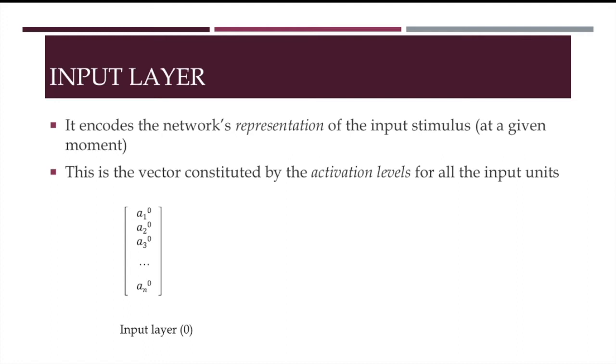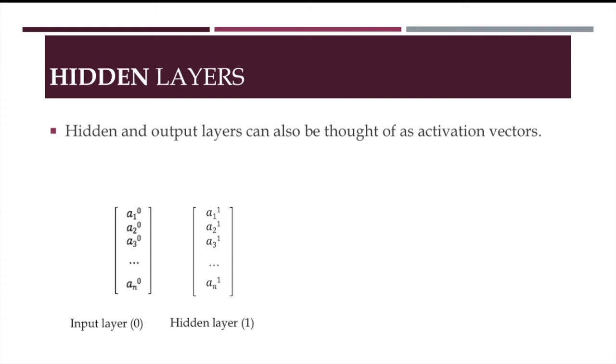The subindex identifies each unit, the superindex the layer itself. So the number at the top is the activation level of the first unit in layer 0. The second is the activation level for the second unit also in layer 0, and so on.